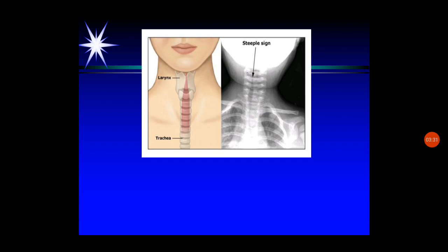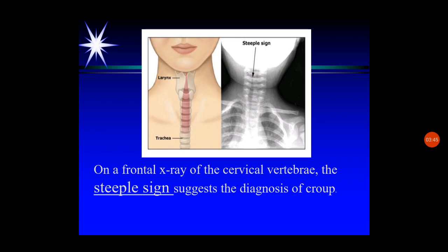An important sign noticed on X-ray of a child with acute laryngotracheal bronchitis is the steeple sign. On the frontal X-ray of the cervical area, the narrowing of the airway produces this steeple sign appearance, which suggests the diagnosis of croup.